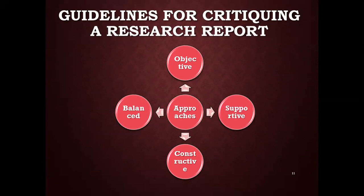Guidelines for critiquing a research report. The researcher needs to maintain objectivity, be supportive, constructive, and balanced. The researcher must not express any personal views throughout the critiquing process. All comments need to be supportive and encouraging, with constructive suggestions and a positive attitude. A balanced approach keeps both strengths and weaknesses in view. Reasons and explanations must be provided when submitting weak points, and only clear statements should be selected to communicate.